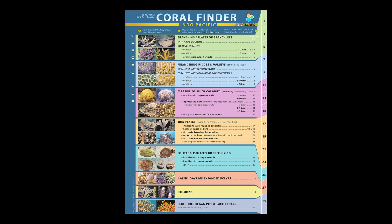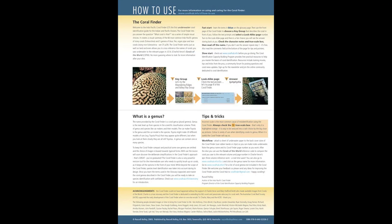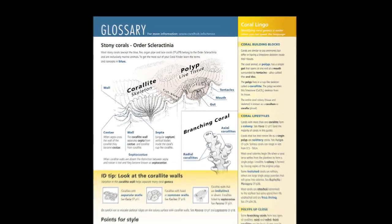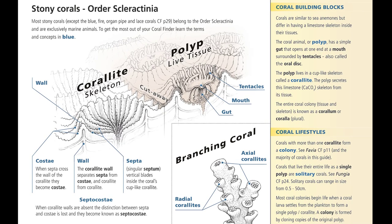First, you need to know the basic anatomy of a coral. Take the time to read the 'how to use' page inside the front cover of the Coral Finder — it's brief and to the point. Then read the glossary page, paying particular attention to the illustration of the coral skeleton. Once you grasp the simple terms highlighted in blue, you will be able to use the Coral Finder to identify all the common coral genera in the Indian and Pacific Oceans. Not bad for a five-minute read.